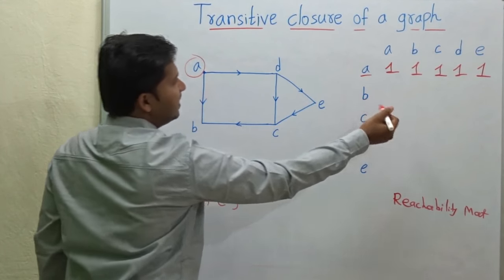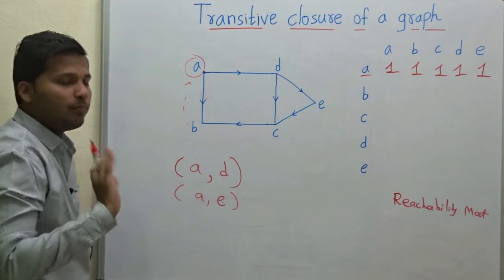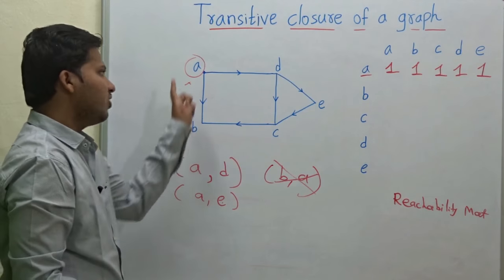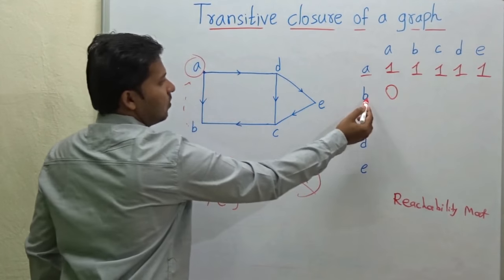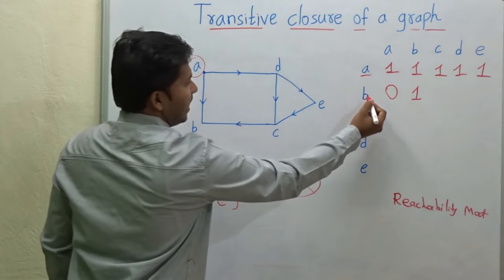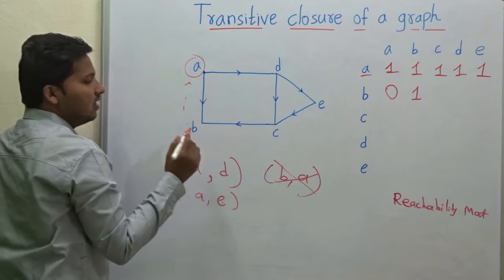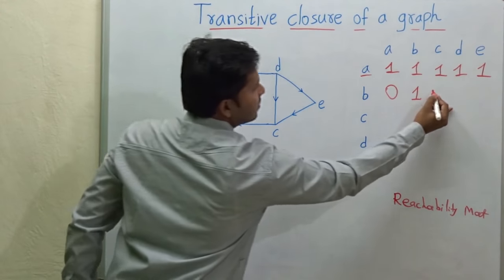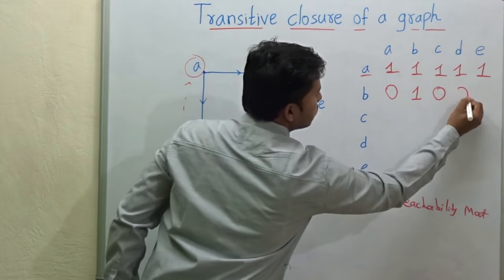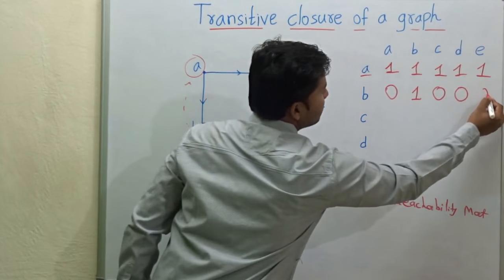For vertex B, can it reach vertex A? Is there any path from vertex B to A? No, there is no path from vertex B to A, so the value is 0. Can B reach vertex B? Yes, obviously it can reach itself. Can vertex B reach to vertex C? No, there is no path, so the value will be 0. Then from vertex B to vertex D, there is no path, so value will be 0. Then from vertex B to vertex E, there is no path, so the value will be 0.